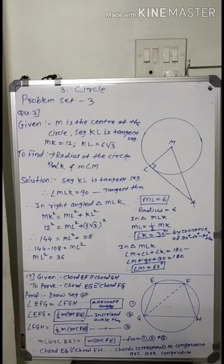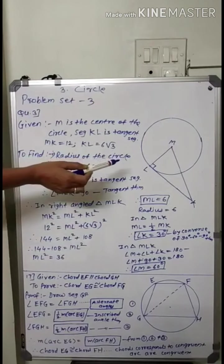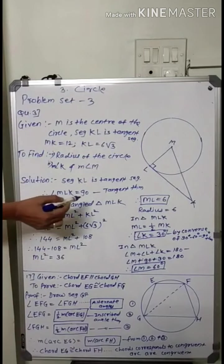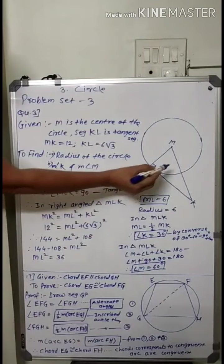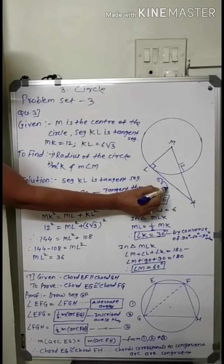Solution: Segment kl is tangent segment. Therefore angle mlk equal to 90 degrees by tangent theorem, tangent perpendicular to the radius. Therefore in right angle triangle mlk, here mk equal to 12 and this side equal to 6 root 3.